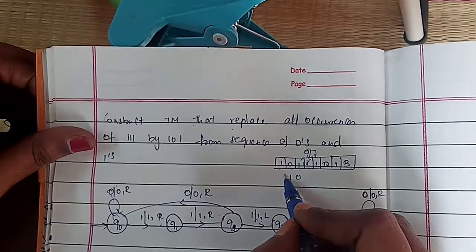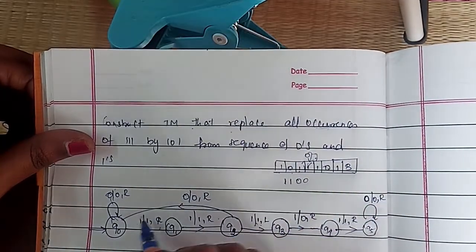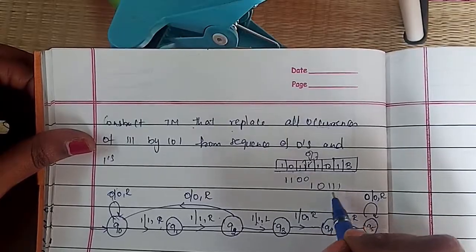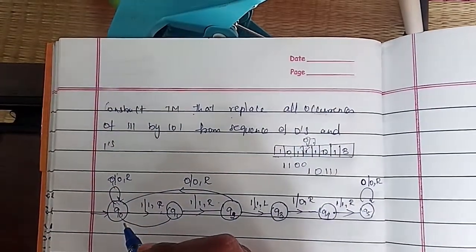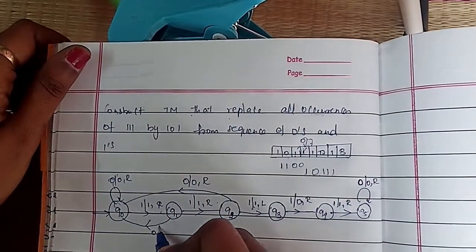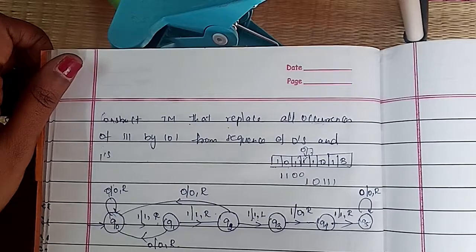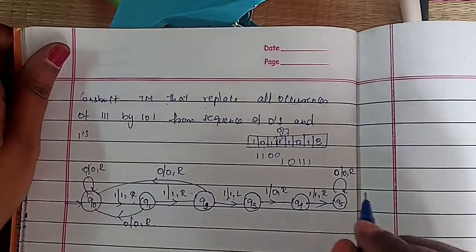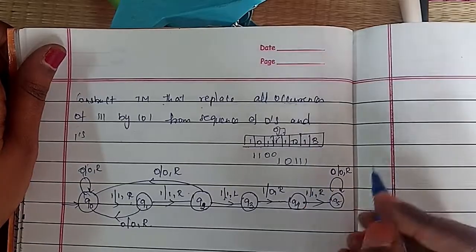If you have one double-one followed by double-zero, you take this path. If you have one zero followed by triple one, you take this other path, giving you zero zero. This is the way it has to be done so that all the conditions are satisfied.